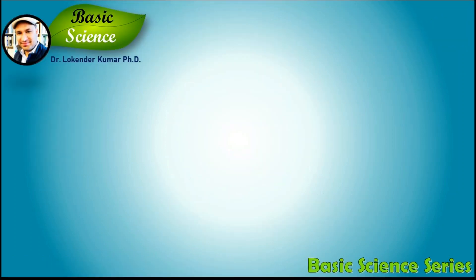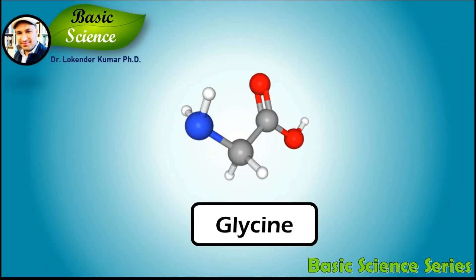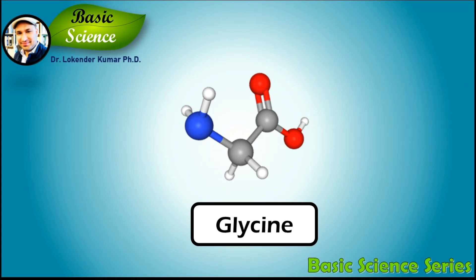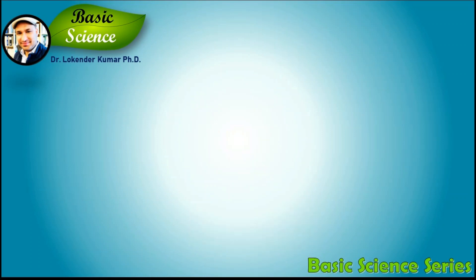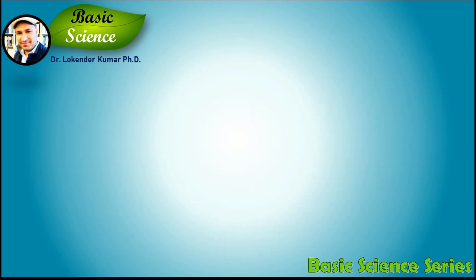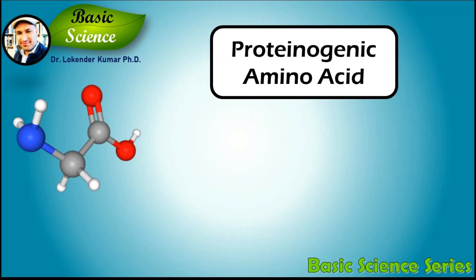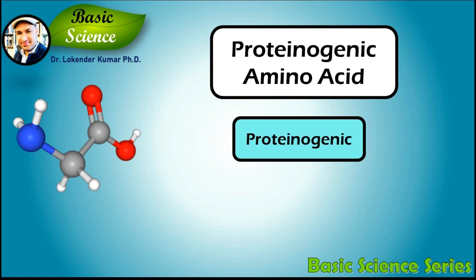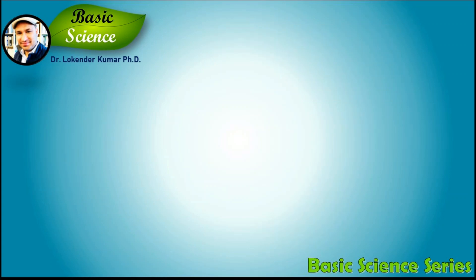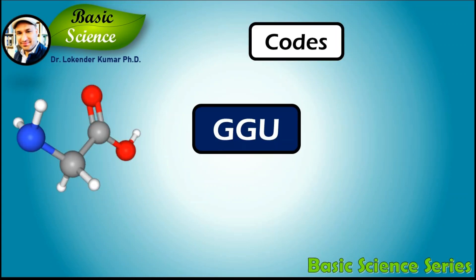Welcome to the Basic Science Series. Today we are going to discuss amino acid glycine. Glycine is an amino acid that has a single hydrogen atom as its side chain. It is the simplest amino acid with the chemical formula NH2CH2COOH. Glycine is one of the major proteinogenic amino acids — amino acids that are incorporated biosynthetically into proteins during translation. The word proteinogenic means protein creating.